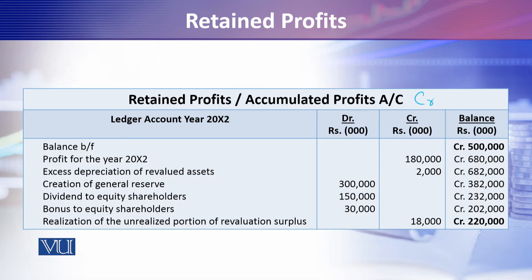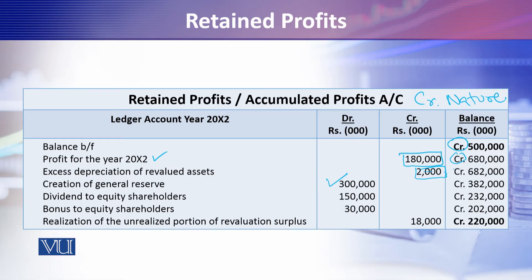If you look at a retained profit account, things become clearer. It is a credit-nature account. Assuming an opening balance of 500 million, this year 180 million profit for the year is added. Excess depreciation on a revalued asset is transferred from the revaluation reserve into retained profits. Then a general reserve is created — when general reserve is created, retained profits are debited. From 682 million, 300 million is set aside as reserve, leaving retained profits at 382 million.